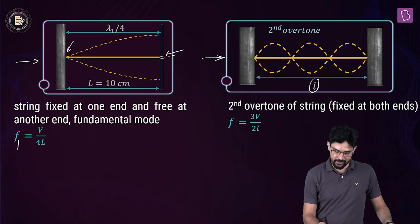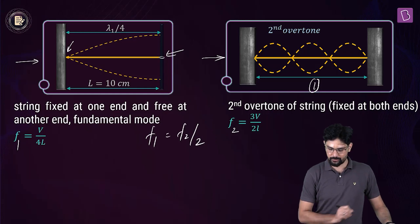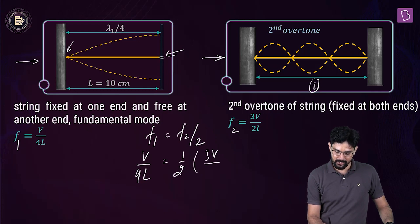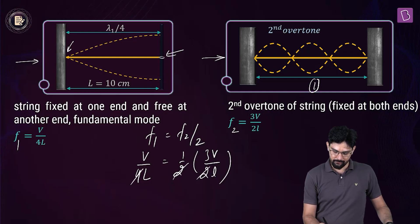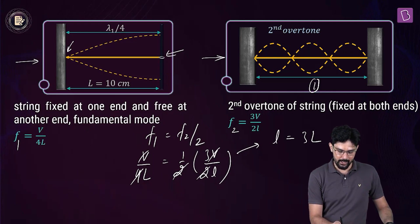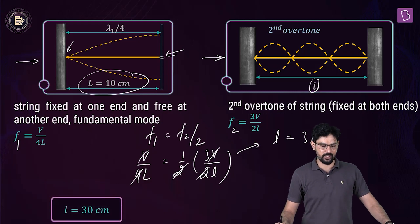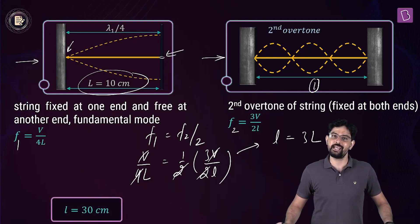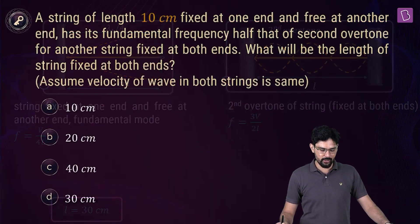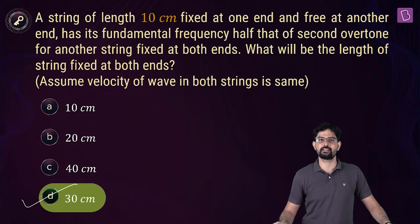Let's call the fundamental frequency F1 and the second overtone frequency F2. Given that F1 = F2/2, substituting: V/(4L) = (1/2) × 3V/(2l). This gives small L = 3 × capital L, and since capital L is 10 cm, the length of the string fixed at both ends is 30 cm. Option D is the right answer.